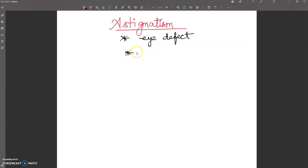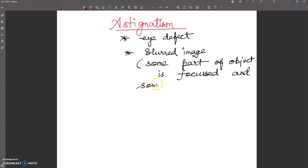There will be a formation of blurred image. A blurred image will be formed as some part of the object is focused and some part is not focused.